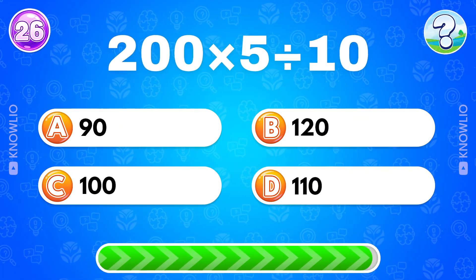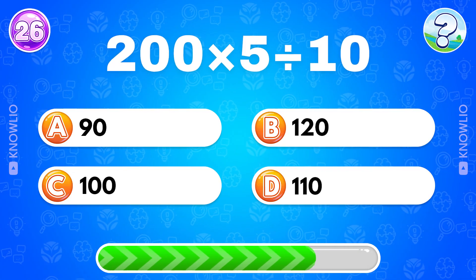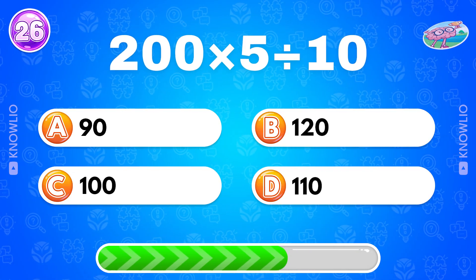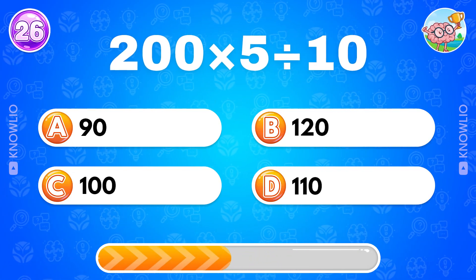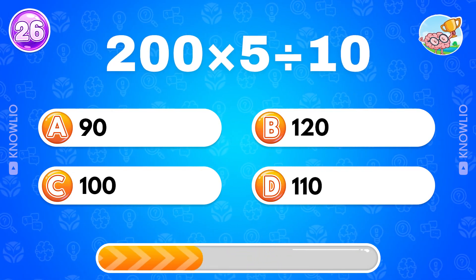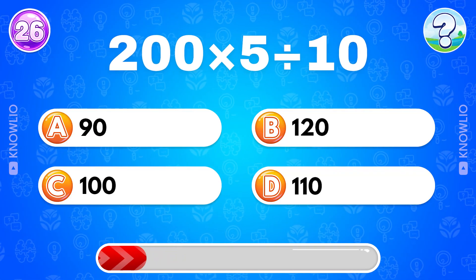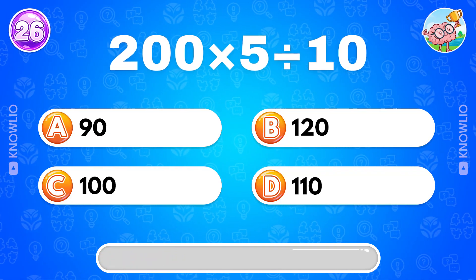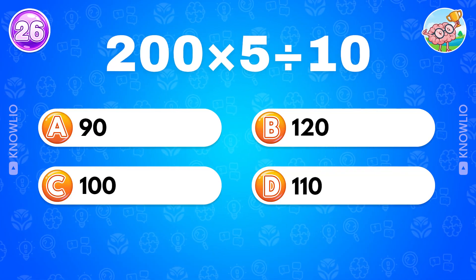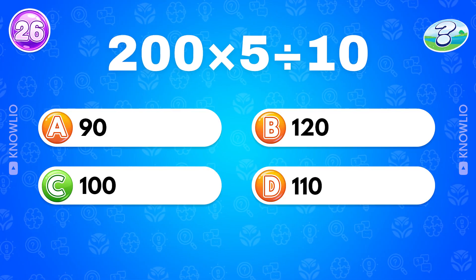What's the result of 200 multiplied by 5 divided by 10? Answer C: 100.